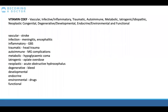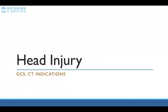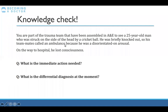The first neuro emergency — really a neurosurgical emergency — is head injury. Here's a question: you're part of a trauma team seeing a 25-year-old man struck on the side of the head by a cricket ball. He was briefly knocked out; teammates called an ambulance because he was disoriented on arousal. On the way to hospital he lost consciousness. What is the immediate action?